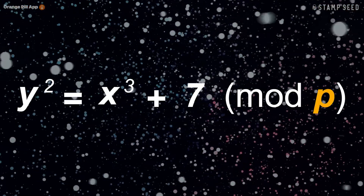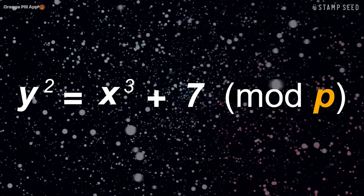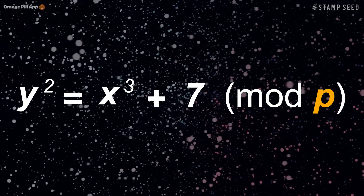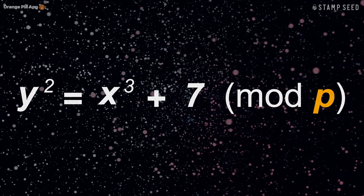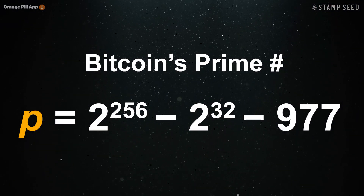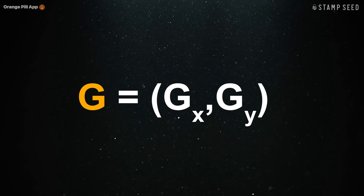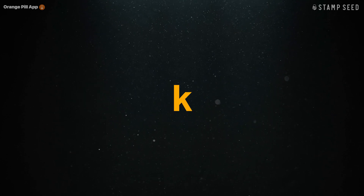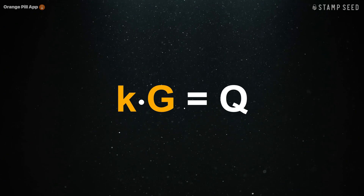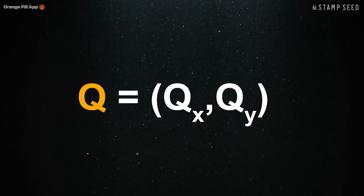Bitcoin does this by using a specific elliptic curve with equation y squared equals x cubed plus seven, using an order number modulo p, where p is the giant prime number 2 to the 256 minus a few numbers to ensure it's a prime. This curve is generated from a set of coordinates g, so that any random integer or whole number can be multiplied to g to produce q, another set of coordinates on the elliptic curve.